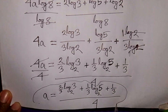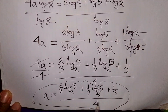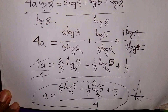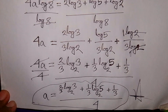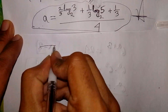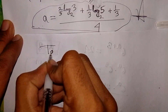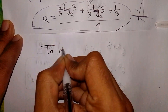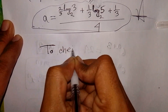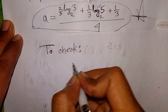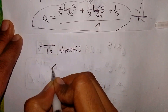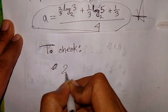So this is the value of A, and this is our final answer. Now, to check our equation, 8 power A times 8 power A times 8 power A times 8 power A is equal to 90.